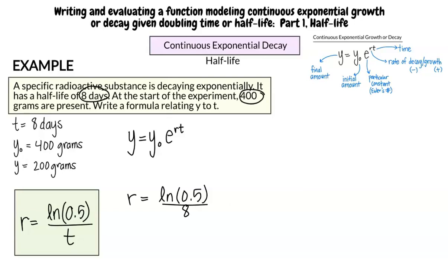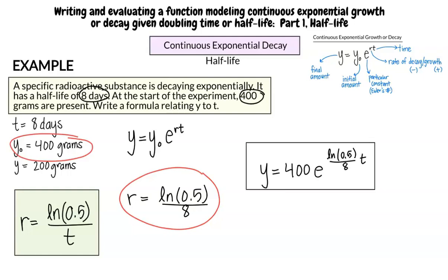For our final answer, we will substitute r and y-naught into the general equation and write y equals 400 e to the natural log of 0.5 over 8 t. You can now use this equation to determine the final amount of the radioactive substance left at any point in time.